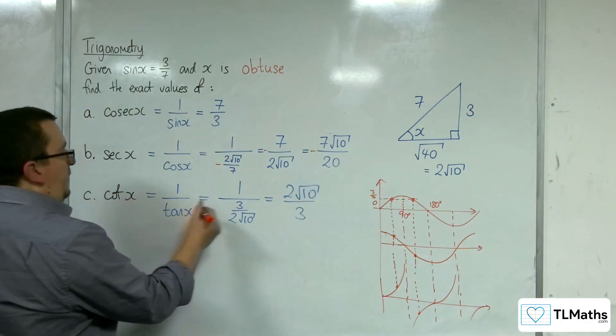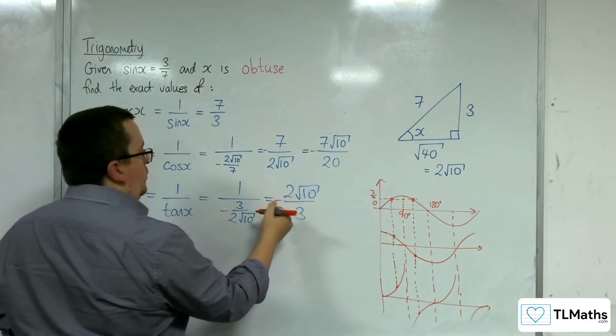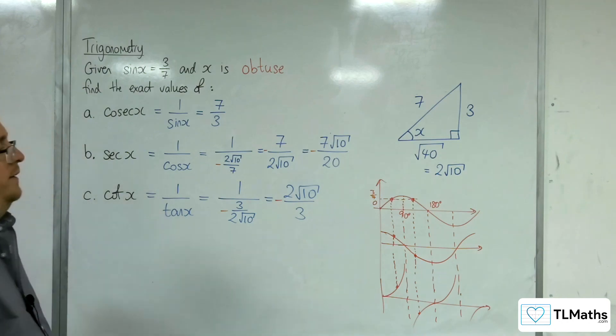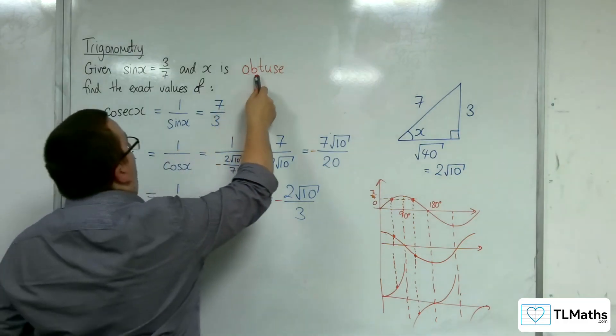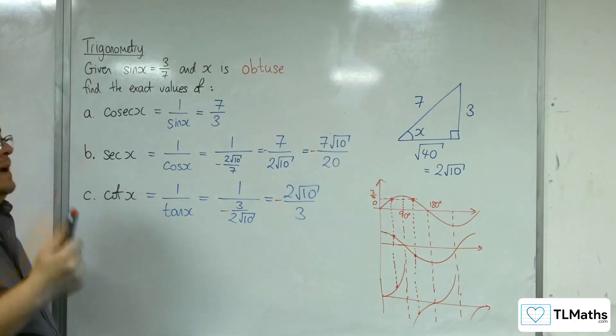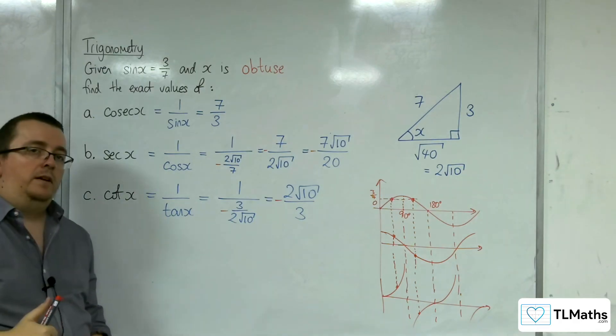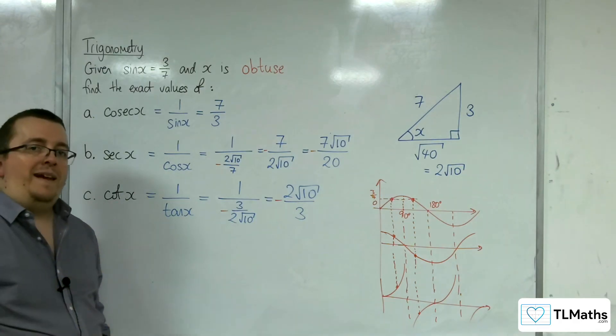And so cot x would equal -2√10/3. Be aware that if you are told x is obtuse, that may well change your answer from if you're solving it for x acute.